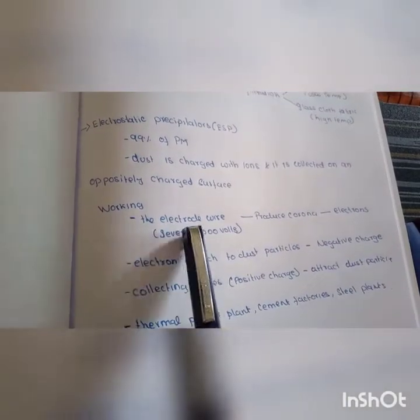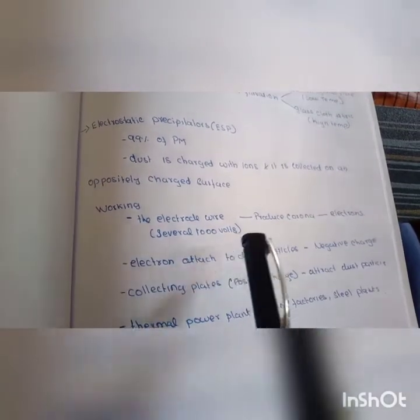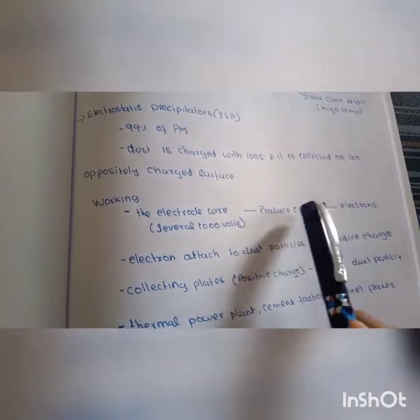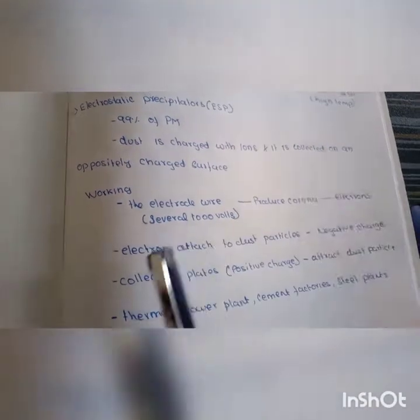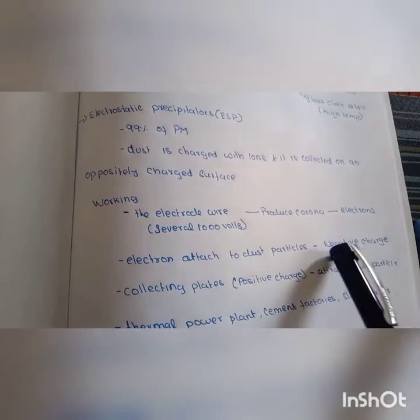Electrostatic precipitator has electrode wires with several thousand volts of charge creating corona discharge. Electrons work on dust particles with negative charge.